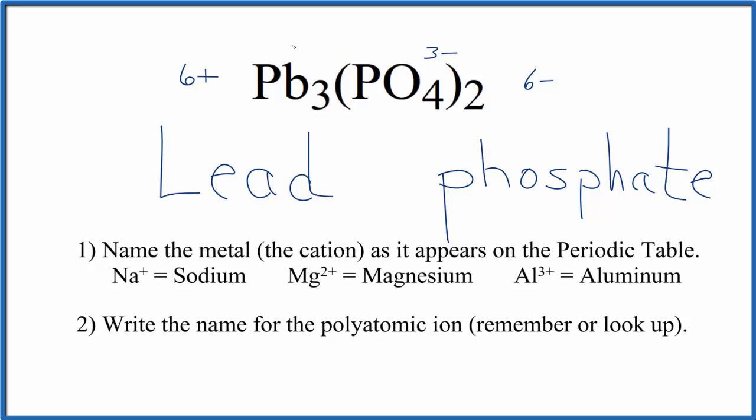3 times 2+ gives us 6+, so the charges balance out with a net charge of zero. We put a Roman numeral II in parentheses between lead and phosphate.